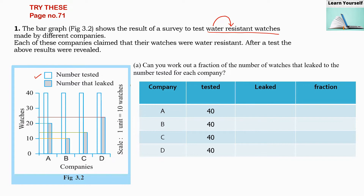For companies A, B, C, and D they have tested 40 watches for each company — that is the number tested. The grey bar tells us the number that leaked: how many watches were faulty and leaked, meaning water got into them and they stopped working.